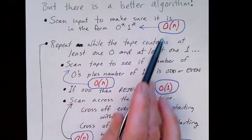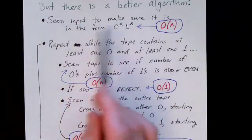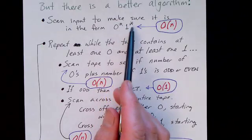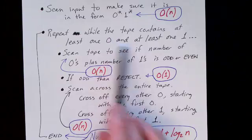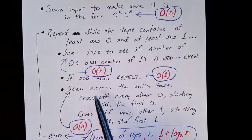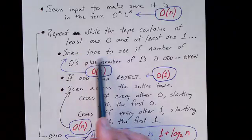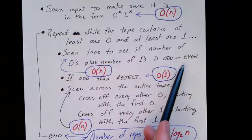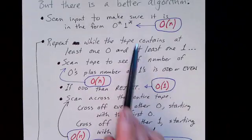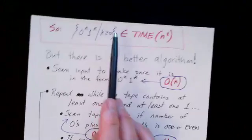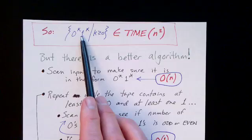We'll talk about the algorithm first and then look at the runtime information. The first thing we do is scan the input to make sure it is in the form of a bunch of zeros followed by a bunch of ones, with nothing out of order. Then we have a repeat loop: while the tape contains at least one zero and at least one one, the body of the loop is different from the previous algorithm. We scan the tape to see if the number of zeros plus the number of ones is odd or even. If this string is a member of this set, it should have length N equal to 2k — in other words, the length should be an even number.